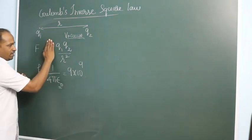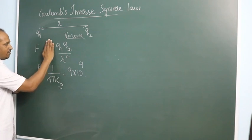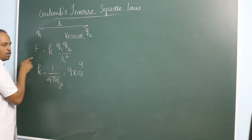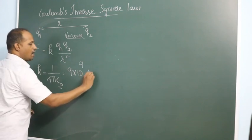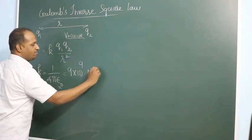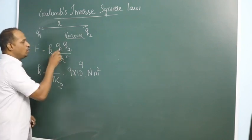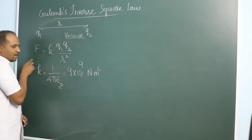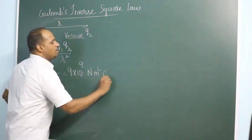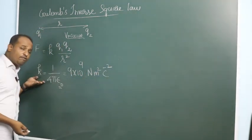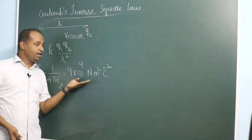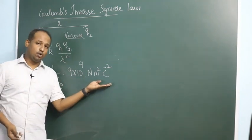Suppose if you keep K over here, bring everything on the other side, you will get F, R square, Q1, Q2. F is measured in Newton, R is meter, so R square is meter square. Q1, Q2, charges are measured in Coulomb. Coulomb into Coulomb, Coulomb square. When that comes to this side, Coulomb power minus 2. So the value of K is 9 into 10 power 9 Newton meter square per Coulomb square.